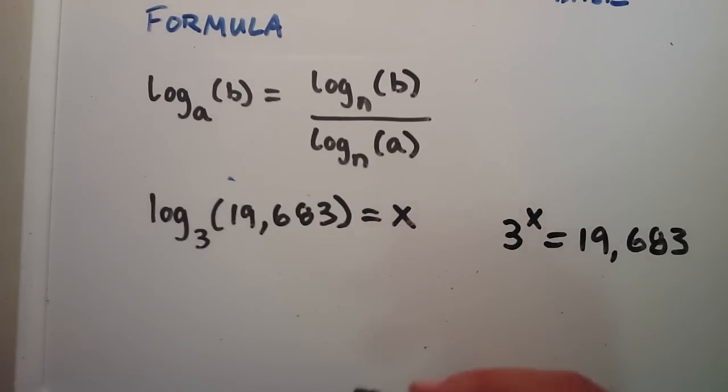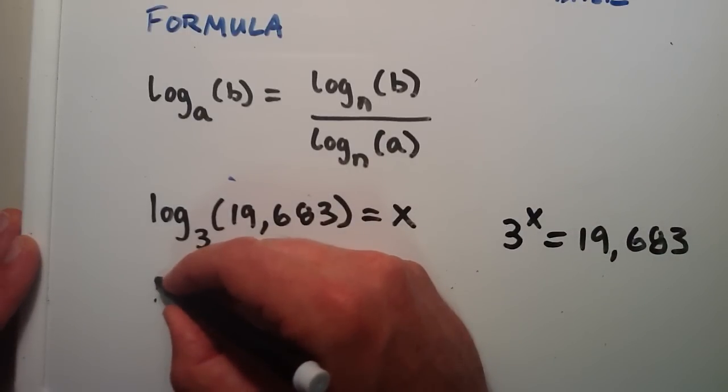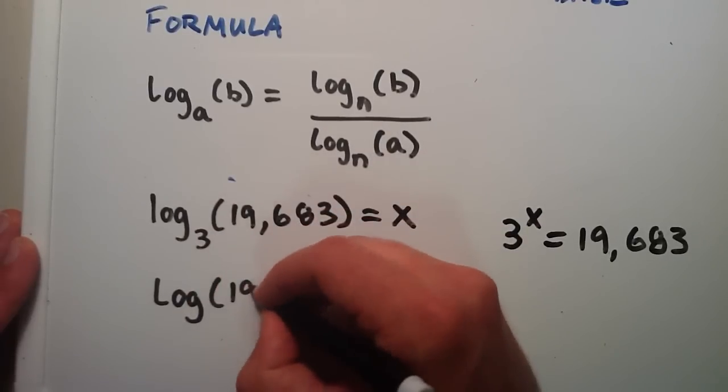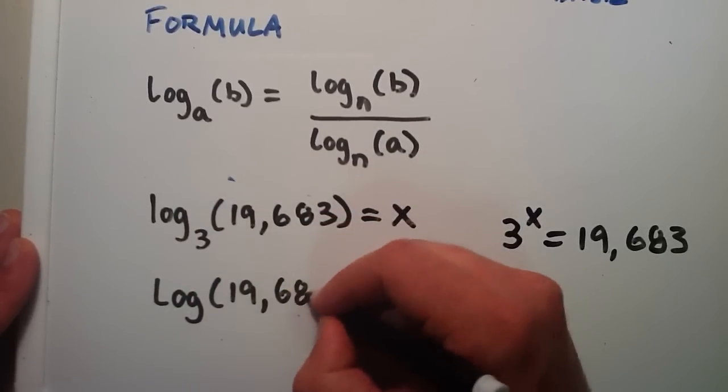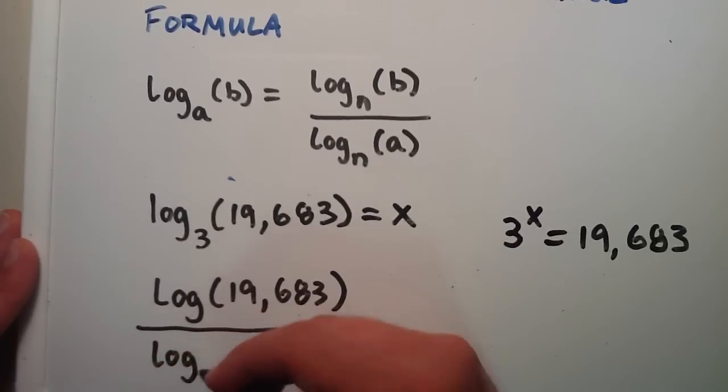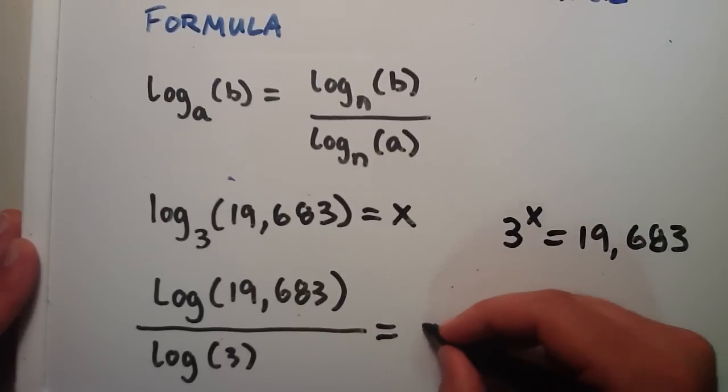But we can use the change of base formula and our calculator to find out the solution. So we can rewrite this as log base 10 of 19,683, and then using our calculator, divide it by log base 10 of 3. And we find out that the answer is 9.